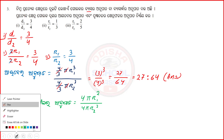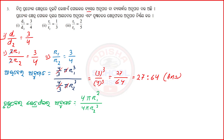Now we have to do this: 4 is equal to 4, π is equal to π. So r1 by r2 squared is equal to 3² by 4². How much? 3² is equal to 9, 4² is equal to 16.